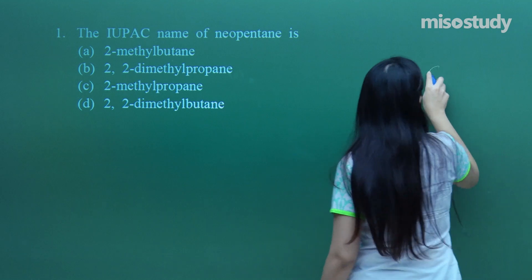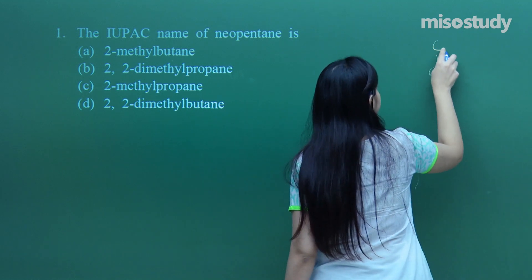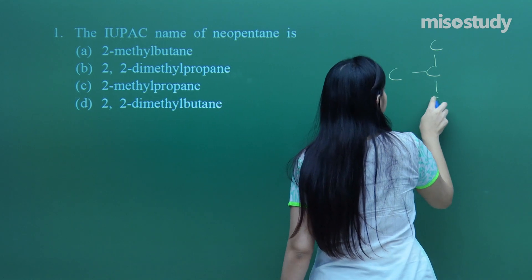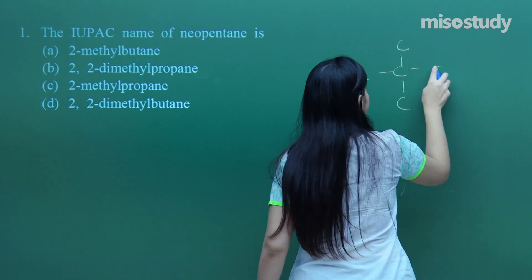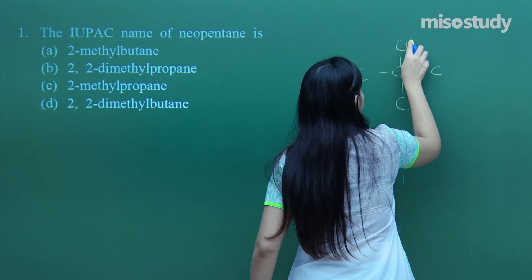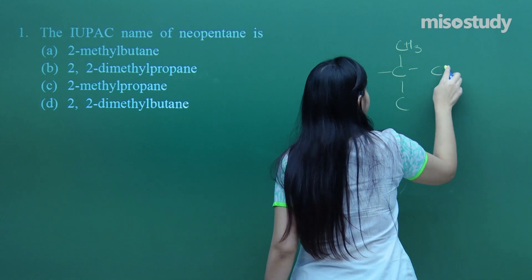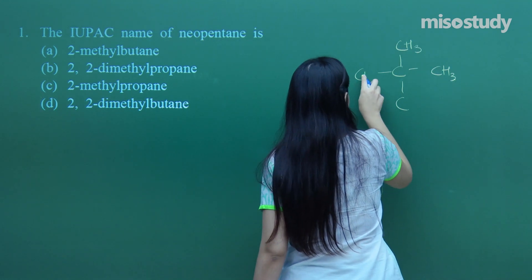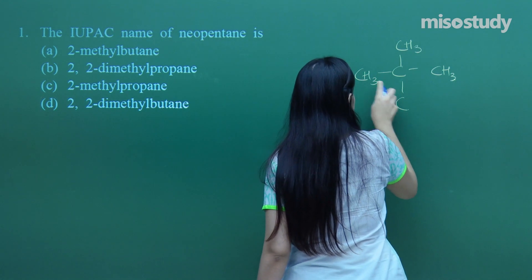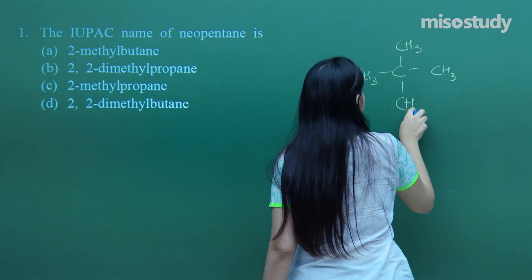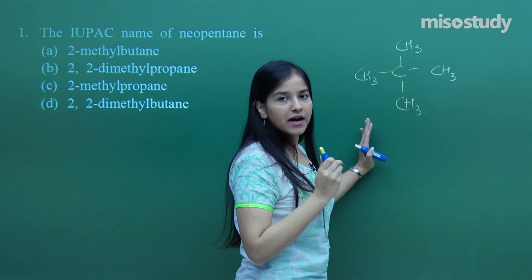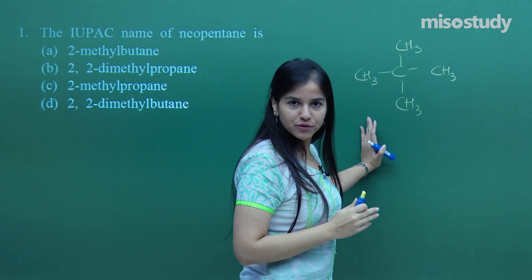I hope everybody knows the structure. So let me just complete the hydrogens — that is Neopentane. You need to have a proper IUPAC name for it.